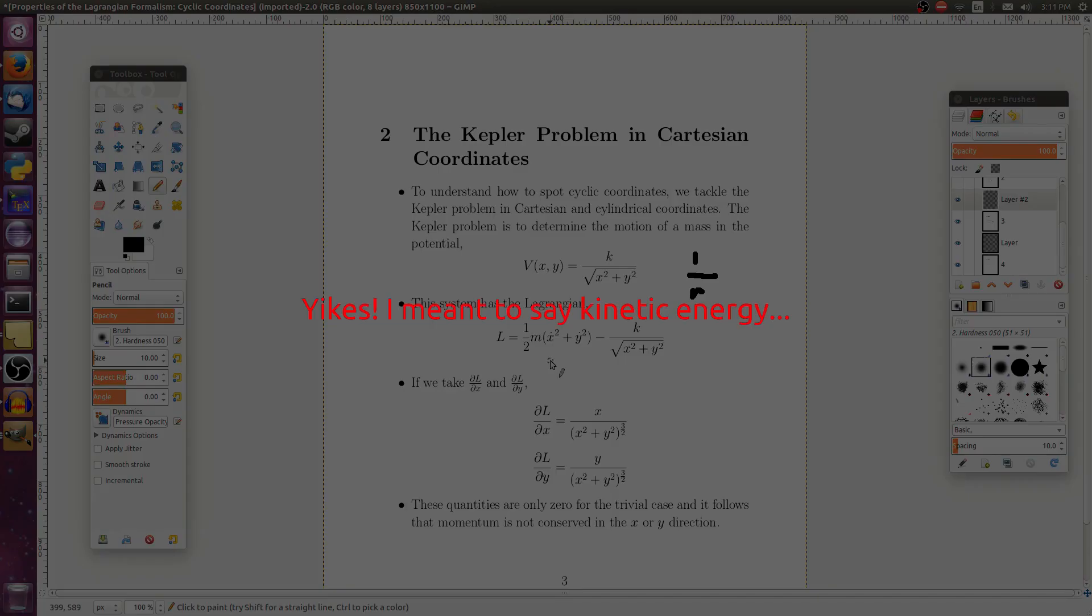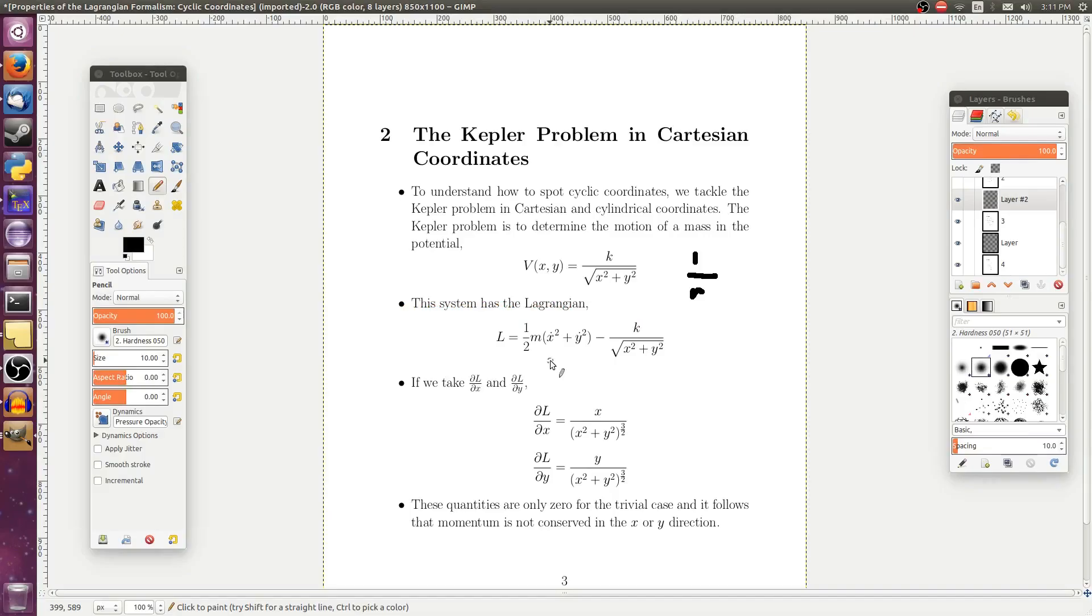So if we write out the Lagrangian of the system in Cartesian coordinates, we have the following. Because it's the total energy, so ½m, then we've got the ẋ² + ẏ² because we've got motion in the x direction and motion in the y direction. And then we have to subtract off the potential. Since the potential is right here, that just gets plugged in right there.